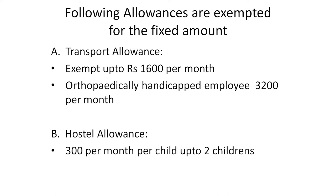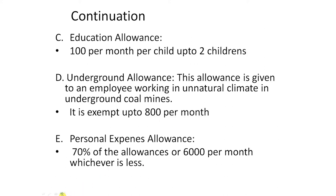Next one: education allowance. Education allowances are those allowances provided to the employees in order to meet their children's education expenses. They will get exemption up to Rs. 100 per month per child, up to two children. Next one: underground allowance. This allowance is given to an employee working in unnatural climate in underground coal mines, and they get exemption up to Rs. 800 per month. Next one: personal expenses allowance. Personal expenses allowances are provided to employees who work in the transport system to transfer goods from one place to another; any expenses arising in between are covered. The exemption is 70% of the allowance or Rs. 6,000 per month, whichever is less.